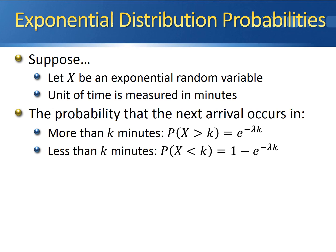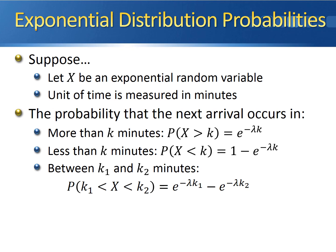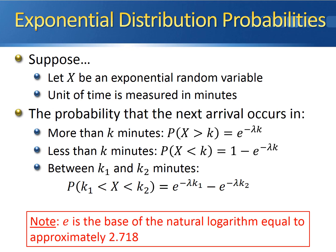The probability of waiting less than k minutes is 1 minus e to the negative lambda times k. The probability of waiting between k1 and k2 minutes, where k1 is less than k2, is e to the negative lambda times k1, minus e to the negative lambda times k2. As a reminder, e is the base of the natural logarithm, approximately equal to 2.718.